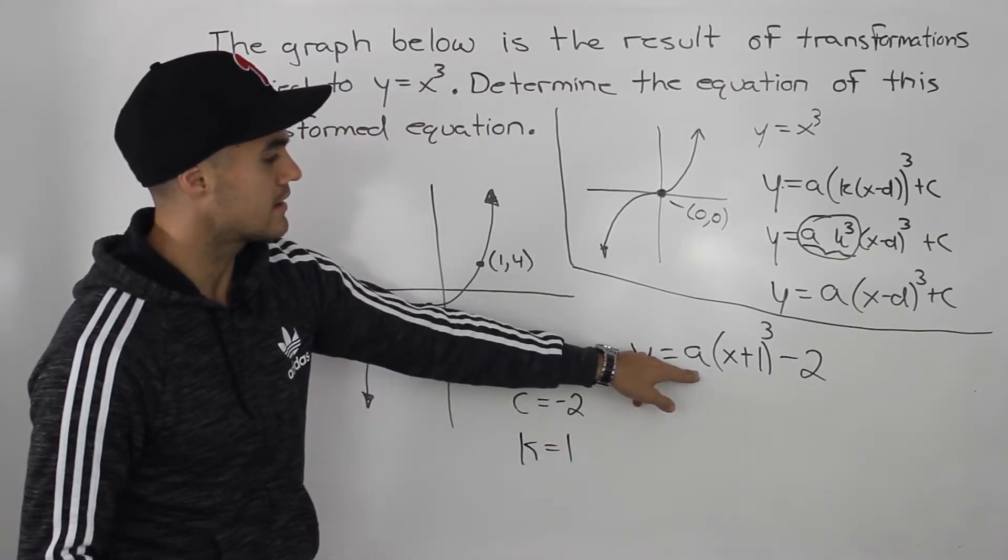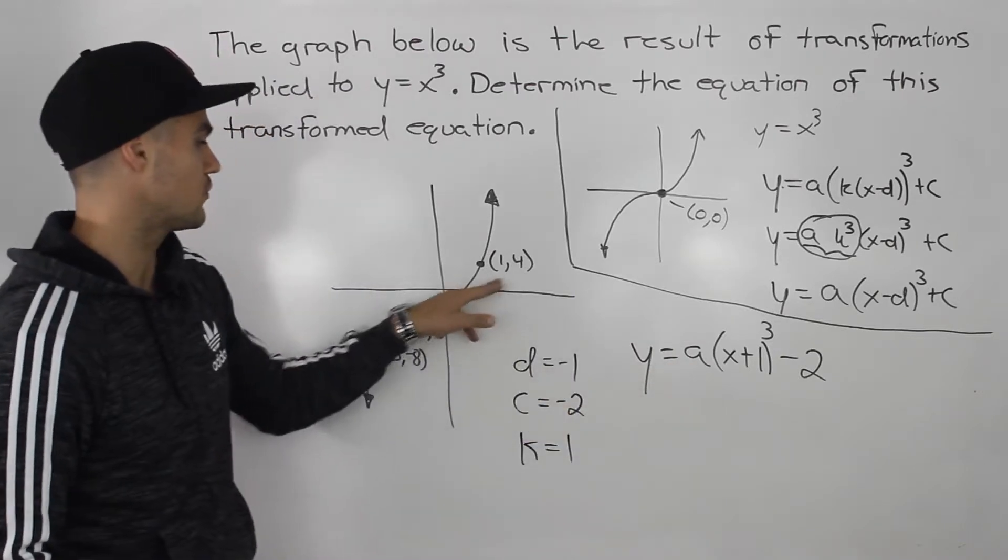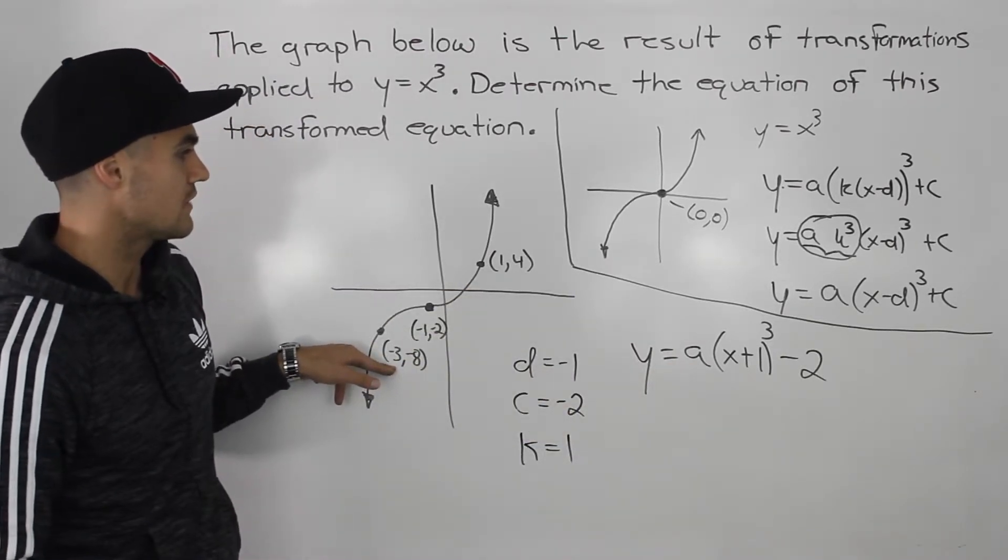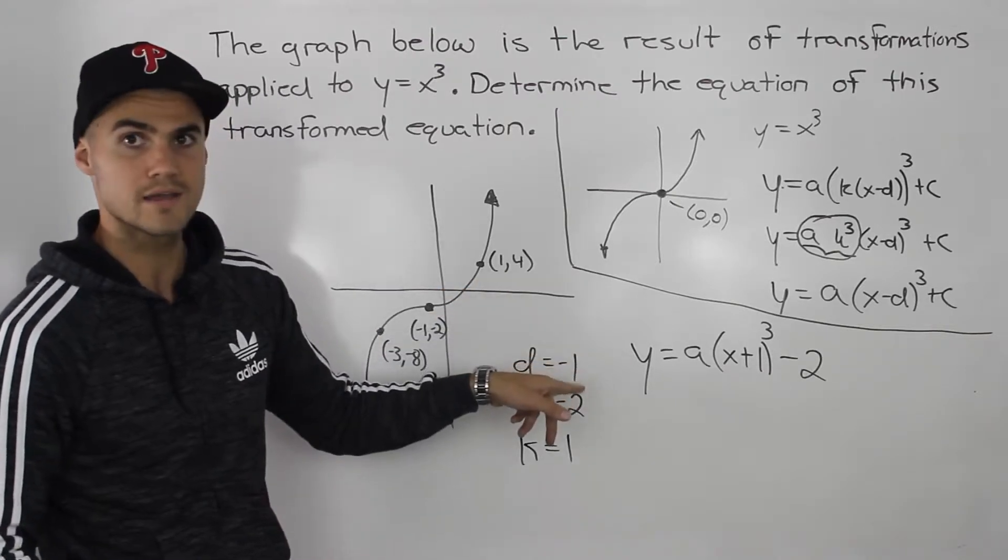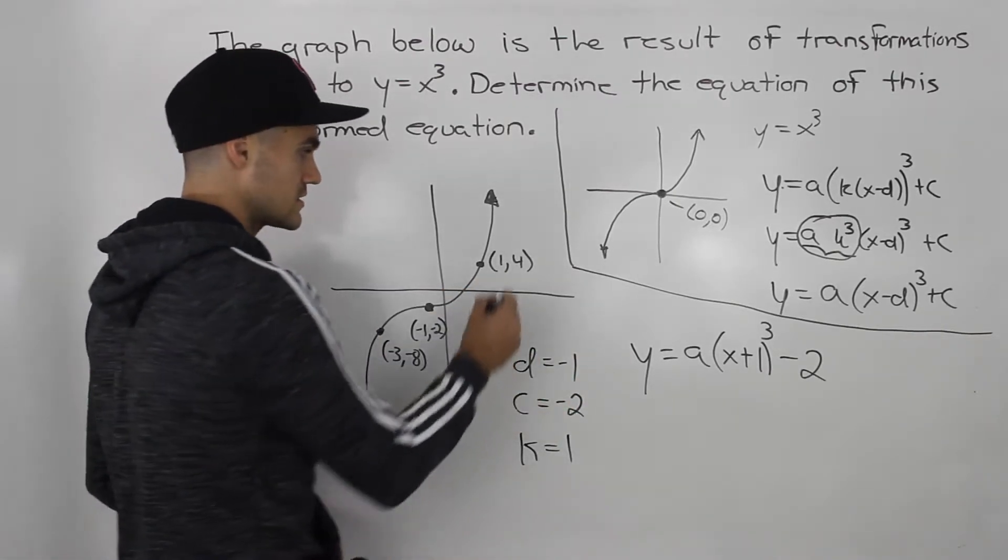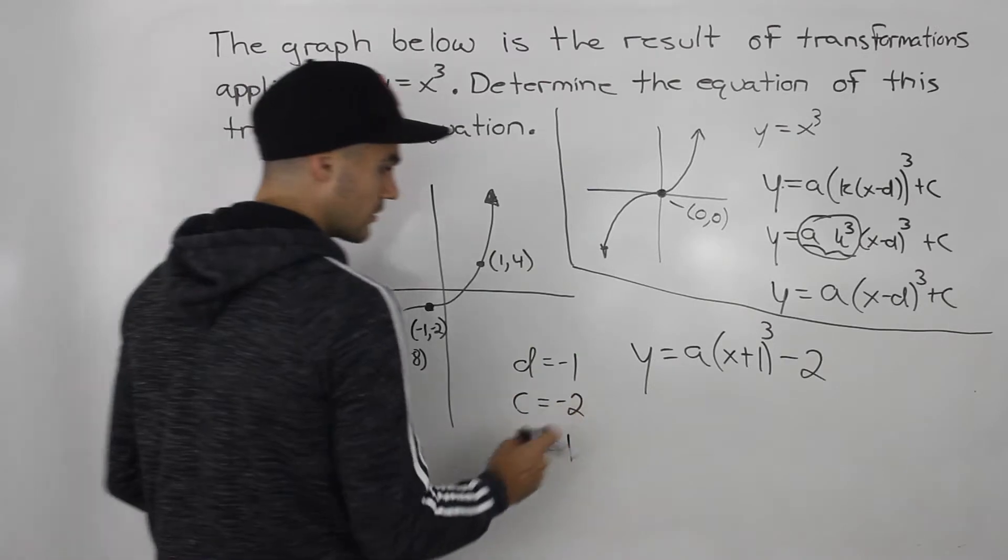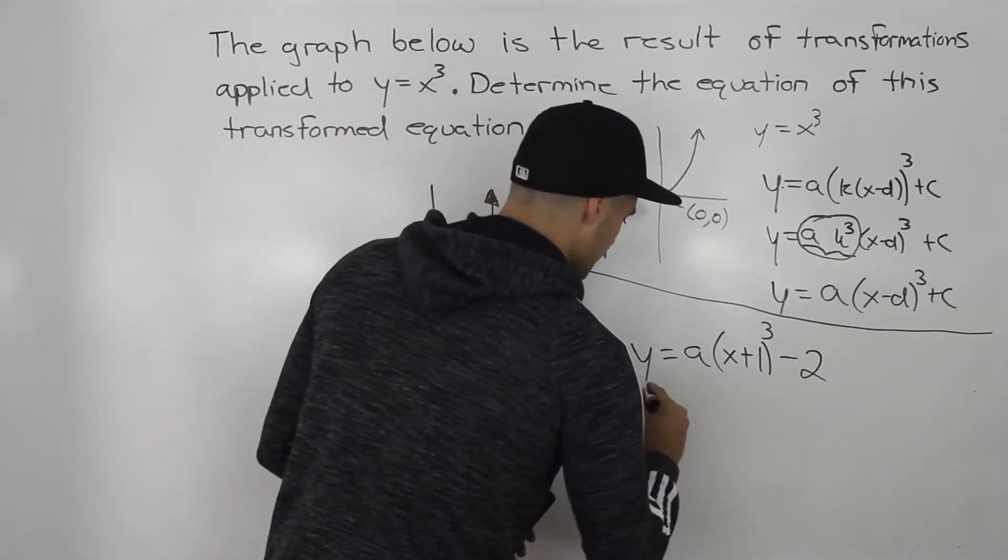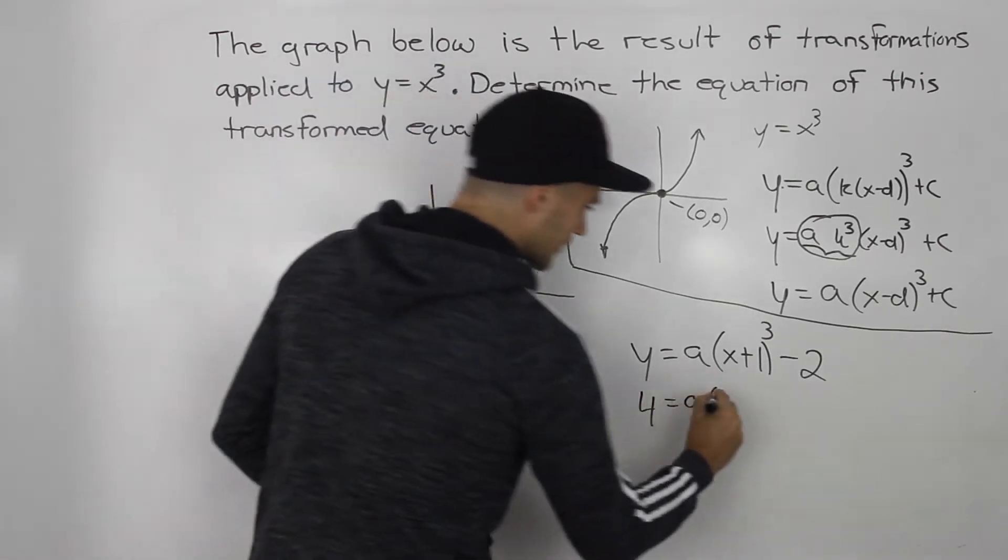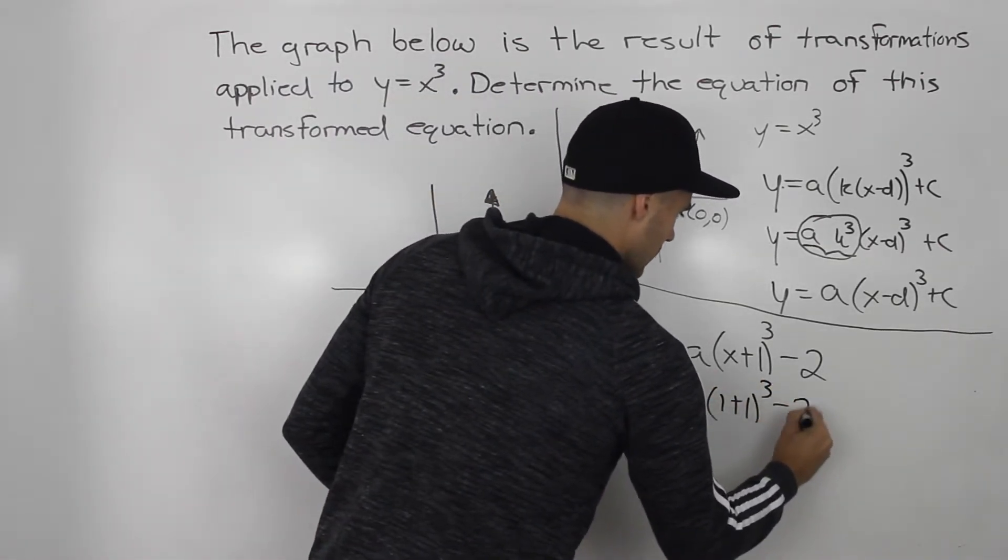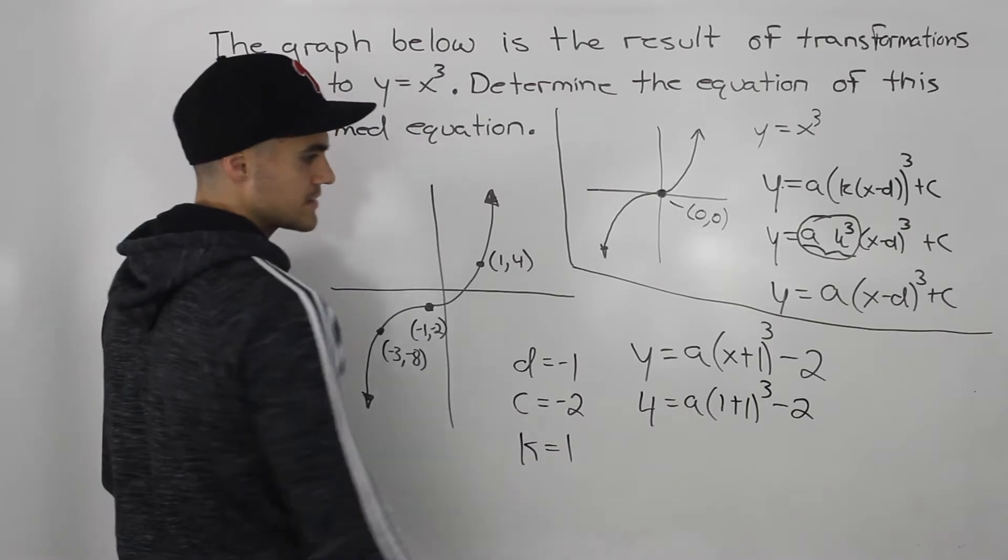Now we can solve for this a value with one of these coordinates. So all we have to do is plug one of these coordinates in for x and y and then solve for a. So let's use this coordinate. So if we plug in 4 for y and then 1 for x, we can now solve for a.